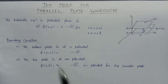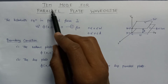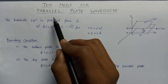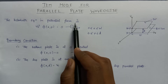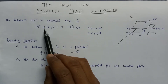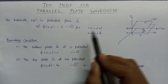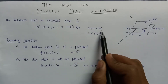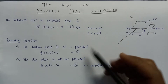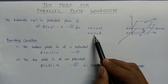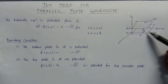Now let us have a look at TEM mode. TEM mode represents transverse electromagnetic mode, in which the wave propagates in the waveguide. The Helmholtz equation in potential form for the TEM mode is given as: Del_T squared of phi(x,y) equals zero. Here the range of x lies between zero to W, where W is the width of the parallel plates. The range of y lies from zero to D, where D is the distance between the two parallel plates.